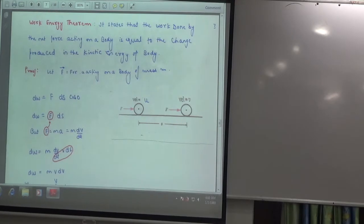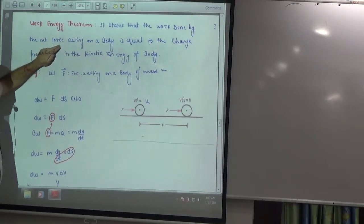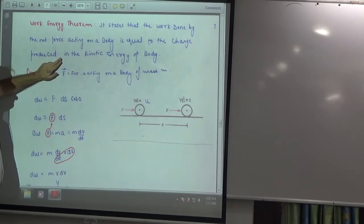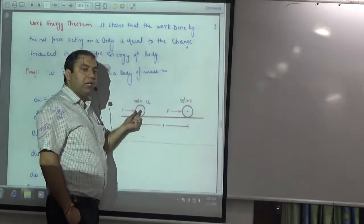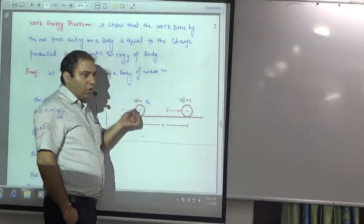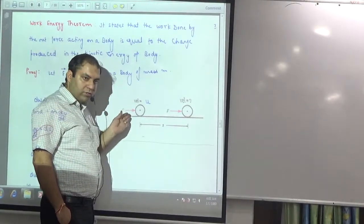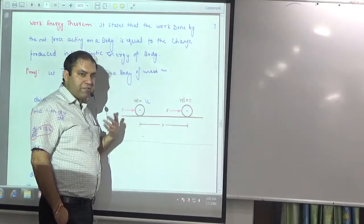It states that work done by net force acting on a body is equal to change produced in kinetic energy. That means, suppose this body's velocity initially was u and finally was v. It didn't happen. What did I put? Force. Velocity has increased. Displacement has been.